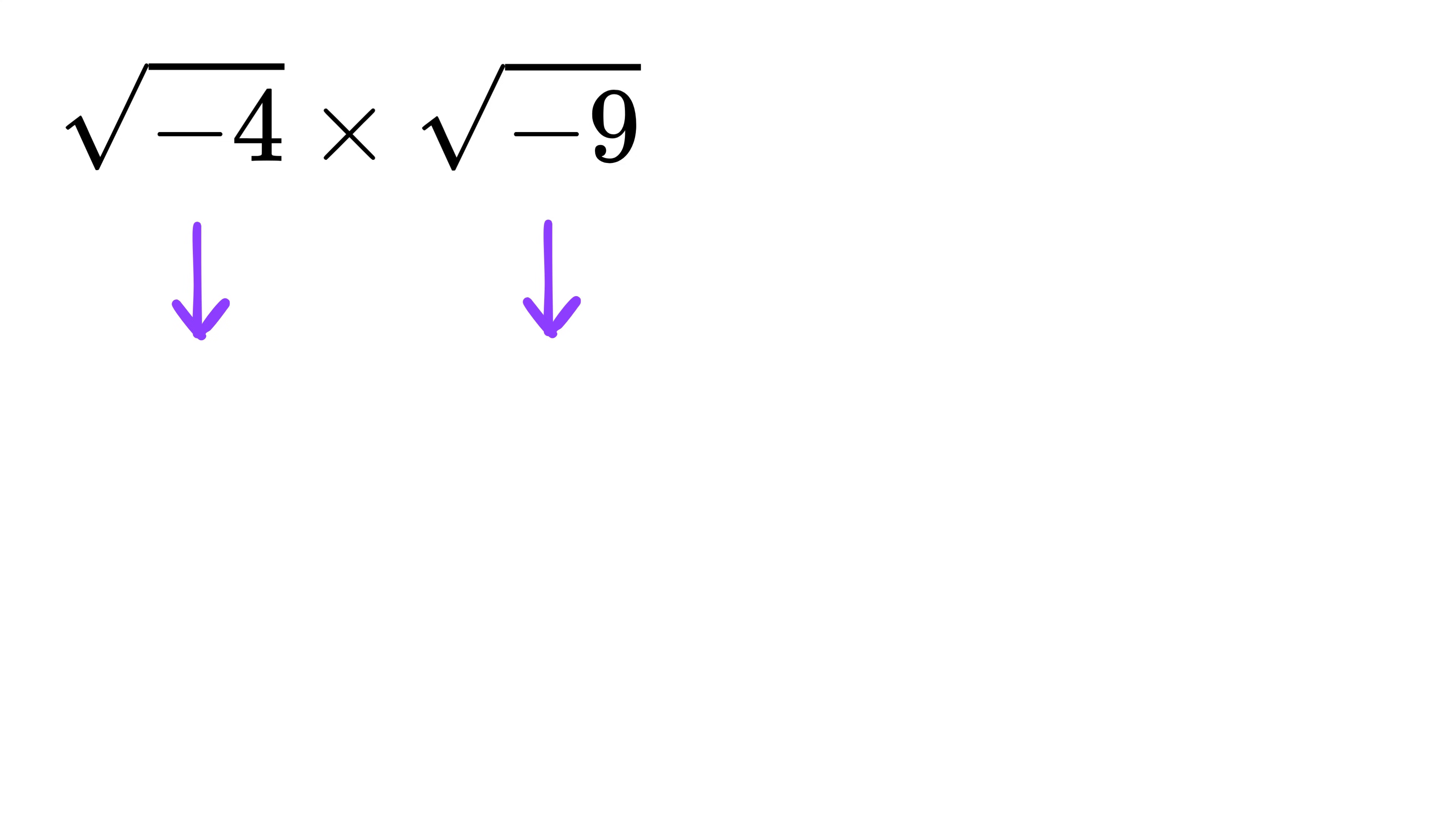Start with the square root of minus 4. We rewrite minus 4 as 4 times minus 1. Since 4 is positive, we are allowed to split the square root like this. The square root of 4 is 2, and the square root of minus 1 is i. So the square root of minus 4 becomes 2i.